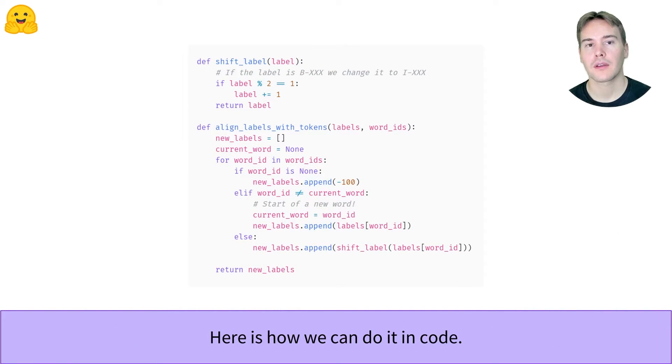The code is then pretty straightforward. We write a function that shifts the label for tokens that are inside the word, that you can customize, and use it when generating the labels for each token.